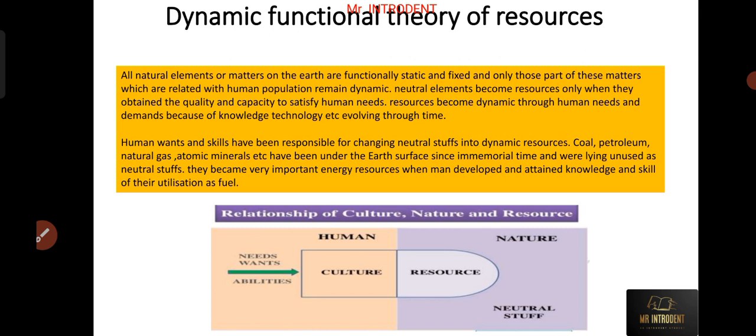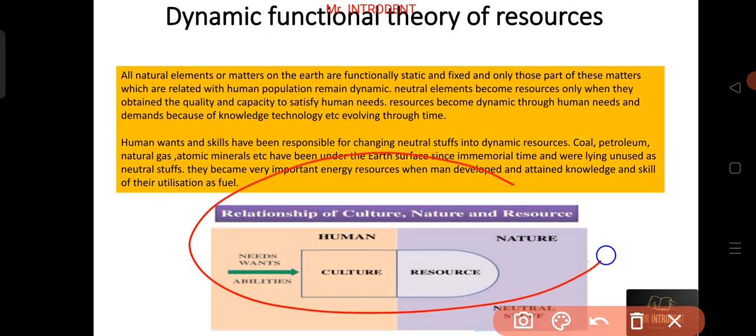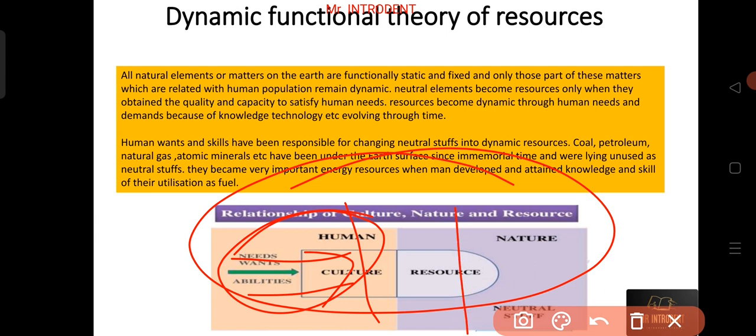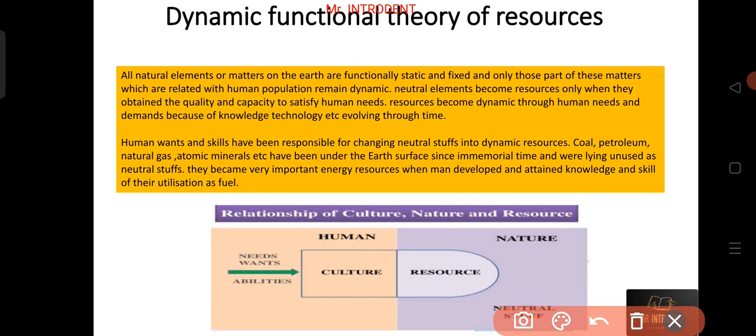It is very important that we see that man is the only factor which makes neutral stuffs as resources. Here we see a relationship: human has needs and wants which make his culture. This is the cultural part. Nature has neutral stuffs. These will become resources only when human wants or abilities will make them of utility or utilize these neutral stuffs.